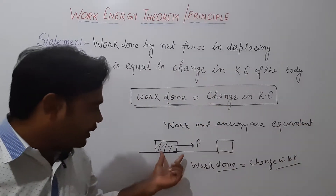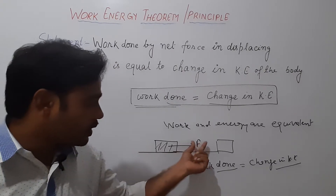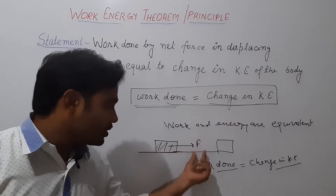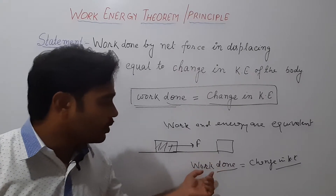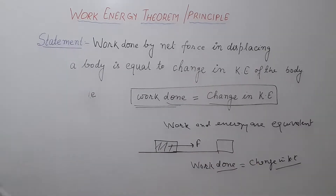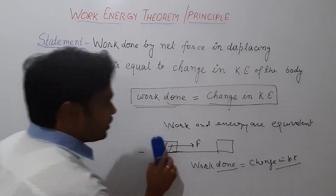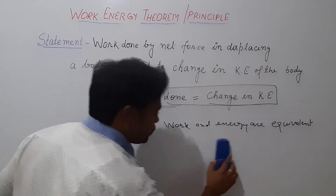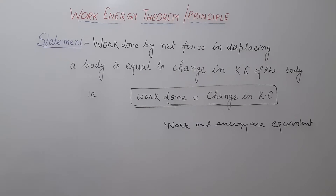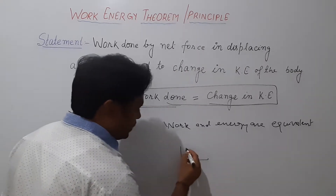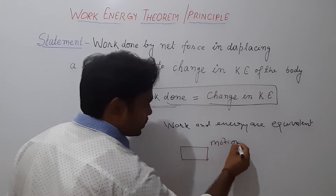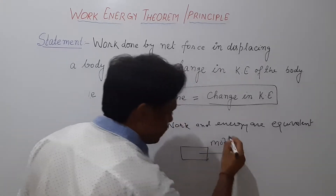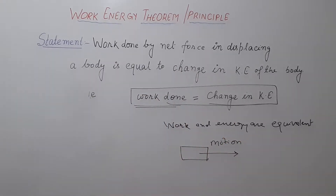We have here a body, and we have a force applied on it. Then this work will be equal to the change in kinetic energy of the body. It means this body has kinetic energy. Suppose this is the direction of motion.